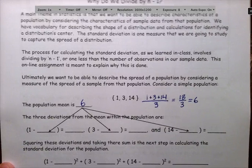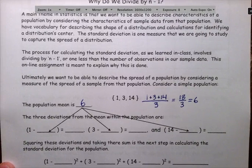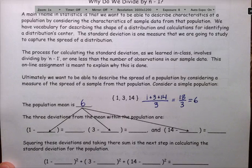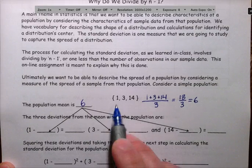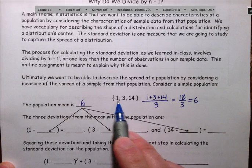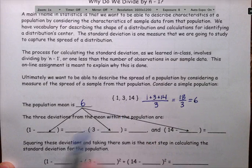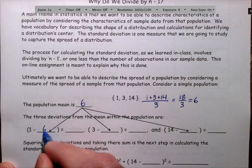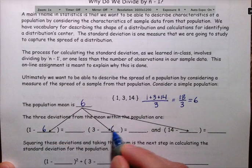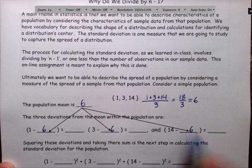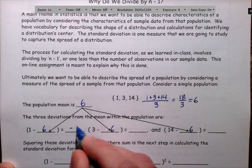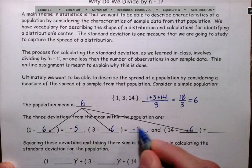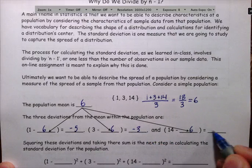Now there are only three observations in the population. That means that in the population there are also only three deviations from the mean. So the observations in the population are 1, 3, and 14. So the deviations from the mean would be 1 minus 6, 3 minus 6, and 14 minus 6. So those deviations would be negative 5, negative 3, and this would be 8.